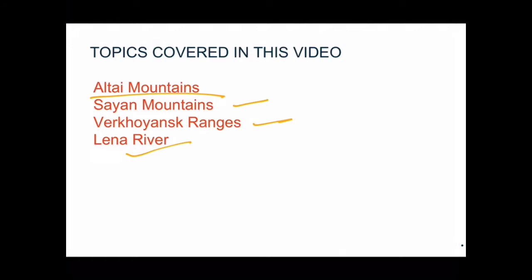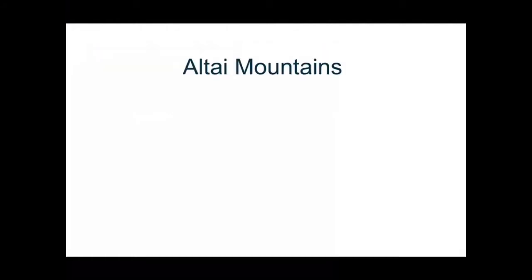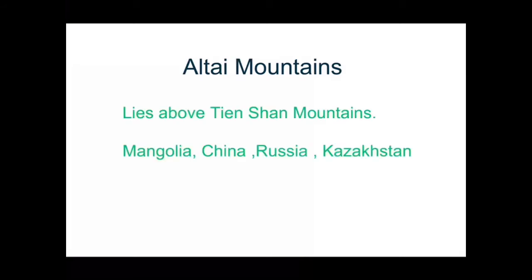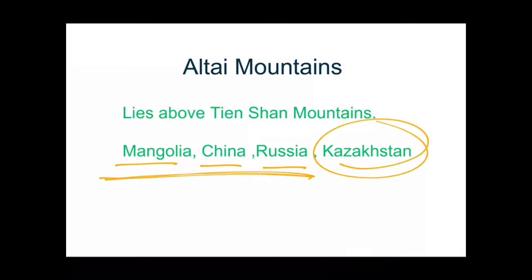Now we see the first topic: Altai Mountains. The Altai Mountains lie above the Tien Shan Mountains — above what we just studied, there is a mountain range called the Altai Mountains. These lie in Mongolia, China, and Russia, but a small part also touches Kazakhstan. To the north-east of the Altai Mountains lies the Kobdo Plateau.